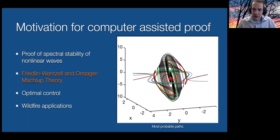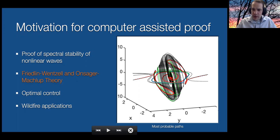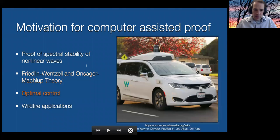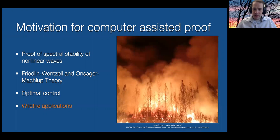One key reason we care about computer-assisted proof is for proving spectral stability of nonlinear waves. For many systems, proving nonlinear stability comes down to showing spectral stability — that there are no eigenvalues in the right half of the complex plane of an ODE eigenvalue problem. That's one of the main reasons we care about this, because it's the last piece in proving completely rigorously the stability of a traveling wave solution.